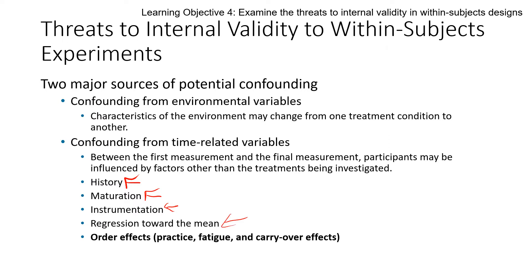Regression towards the mean is when, over time, people get more average on things. This is why in baseball batting averages: at the beginning of the season some people have very high batting averages and some have very low ones, but by the end of the season most people's batting averages average out and get pretty standard toward the center. There's still variance, but they're much closer to each other than they started. That's what's referred to as regression towards the mean.